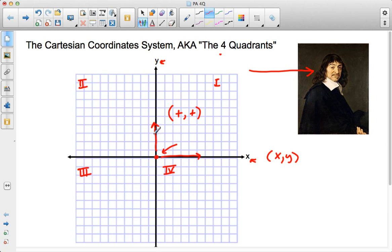In the second quadrant, we're still moving positive on the y, but negative on the x. So we could say that the x-coordinate is negative and the y-coordinate is positive.